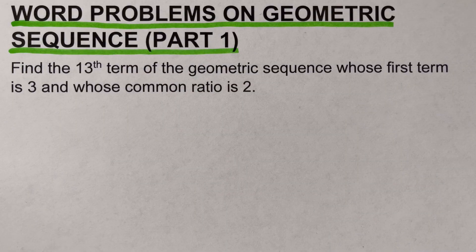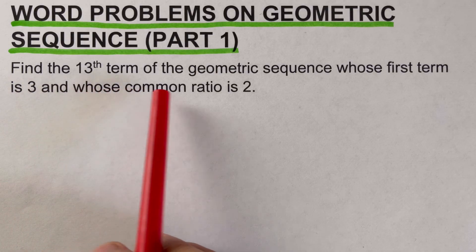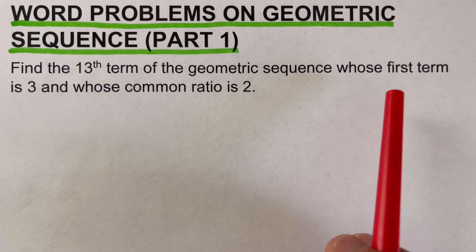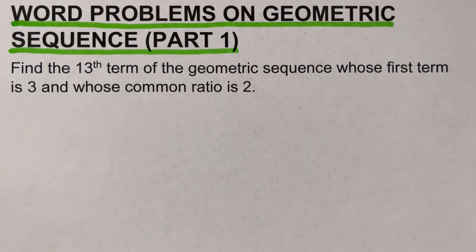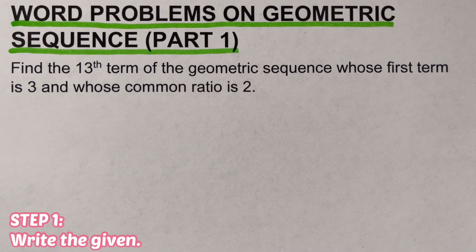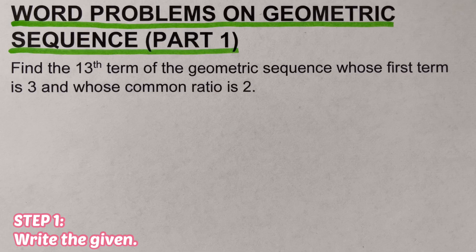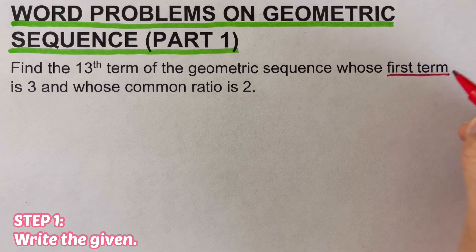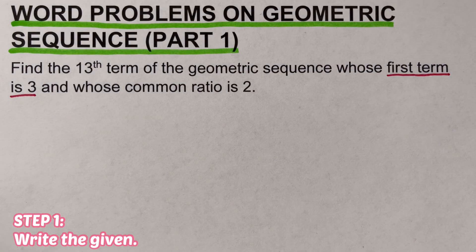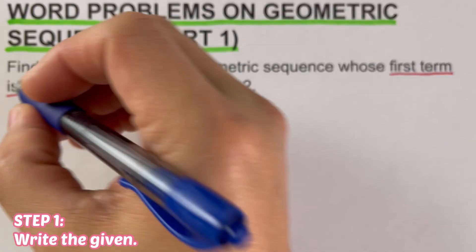Let's go over the problem. We are supposed to find the 13th term of a geometric sequence whose first term is 3 and whose common ratio is 2. There are steps we need to follow to solve this kind of problem. The first step is to write the given values.